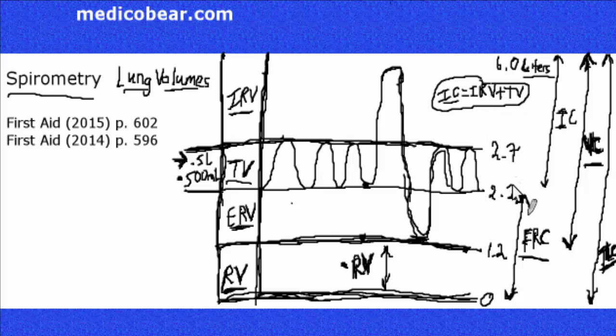IC is inspiratory reserve volume plus tidal volume. Functional residual capacity is ERV plus RV. VC is IRV plus TV plus ERV, it's everything except RV. And TLC is everything. Hopefully this is fairly straightforward to you.